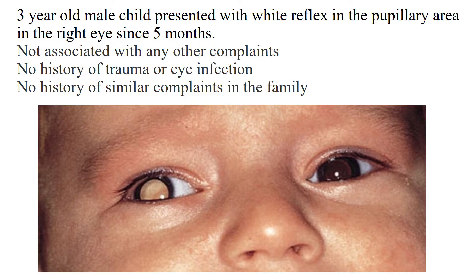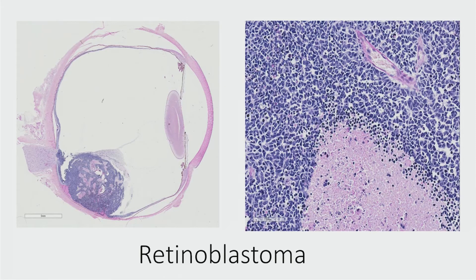The first case is a three-year-old male child who presented with white reflex in the pupillary area of the right eye since five months. It was not associated with any other complaints — no history of trauma, eye infection, or similar complaints in the family. On the left is the specimen of an enucleated eyeball with retinoblastoma; to the right is the histopathological photograph.